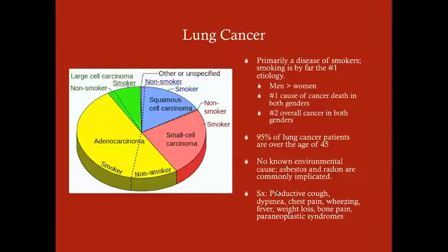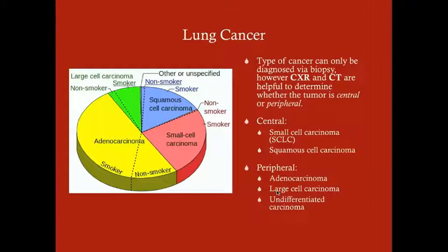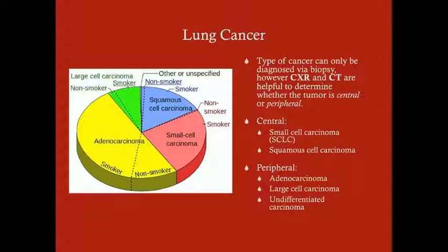Later symptoms include bone pain (indicating spread to bones), and paraneoplastic syndromes such as Lambert-Eaton myasthenic syndrome and hypercalcemia. The type of cancer can only be diagnosed by biopsy — you can't diagnose it on chest X-ray or CT alone. However, imaging is helpful to determine whether the tumor is central or peripherally located, which determines the surgical approach to biopsy.